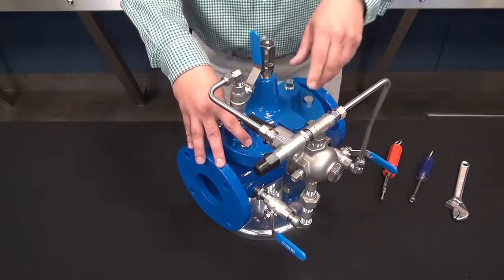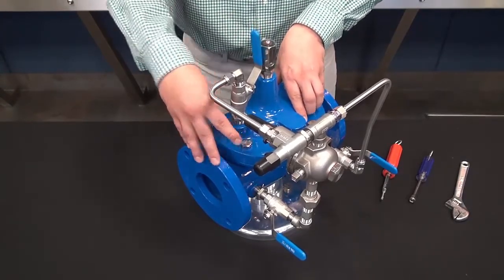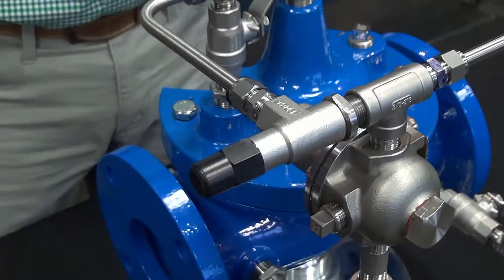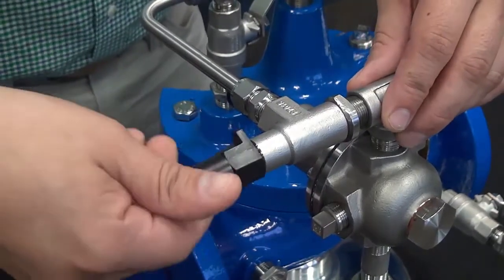On valves four inch and larger, opening and closing speed controls are both optional features. We want to make sure that the speed control is backed out and out of the way when we are setting this valve.